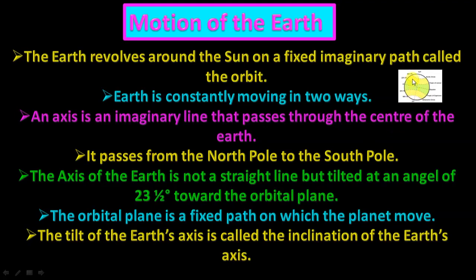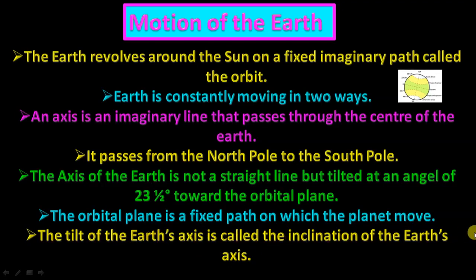It is not a straight line — it is tilted, a little bit bent inside. The orbital plane is a fixed path on which the planet moves. The tilt of the earth's axis is called the inclination of the earth's axis.